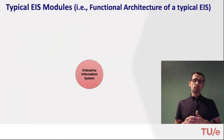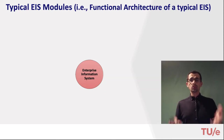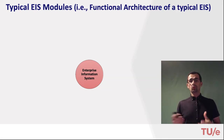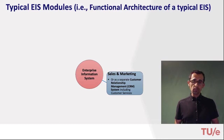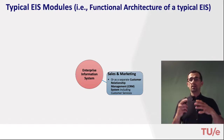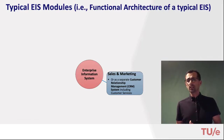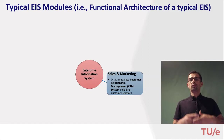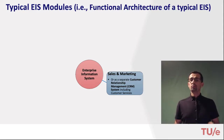Modern enterprise systems offer functional modules for almost all organizational functions, from core processes to supporting ones. Of course, a supporting process in one organization can be a core one in another. For instance, we see core modules for sales and marketing, but depending on how important that function is for a specific company, it may also exist as a separate yet integrated system such as a customer relationship management system. A company decides whether a single module with limited functionalities is sufficient or whether it needs a full integrated system like CRM.